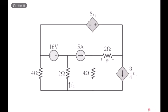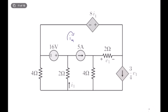The second step is we need to label the meshes and their currents. So we have iA, iB, iC, and iD. As you can see, all of them are in the clockwise direction.